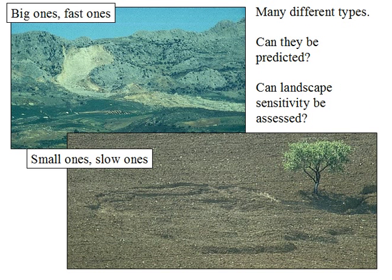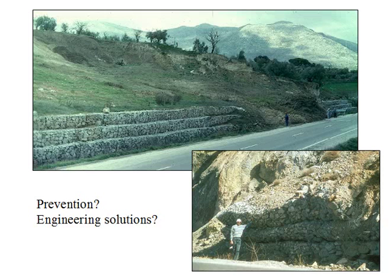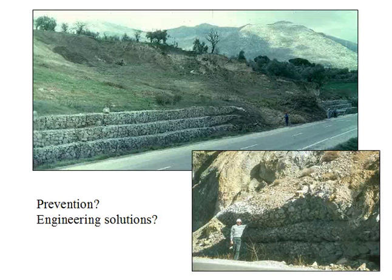There are many different types of mass movement at different scales and moving at different rates. In this course we've been asking big simple questions, so ask yourself whether these events could be predicted. Can the sensitivity of a landscape to this sort of event be assessed? If so, can measures be put in place to prevent mass movements? In this particular location in southern Spain, an engineering solution has been attempted but has evidently failed. What factors do you think might have been miscalculated in this kind of situation?